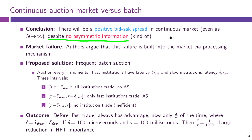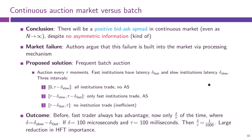This spread persists as if informed trading were in place — as if there was a risk of some traders having private information — which the authors argue is a market failure that happens due to the continuous market. What they propose is a frequent batch auction, say one auction every τ moments. If fast and slow institutions have latencies δ_fast and δ_slow, we can draw the time axis and see how early traders need to submit their orders for execution in the auction at time τ.